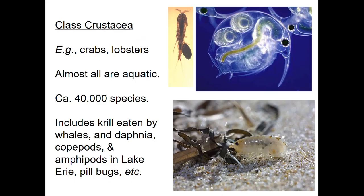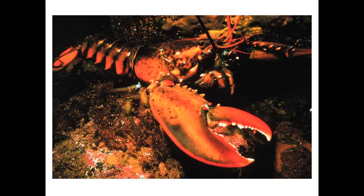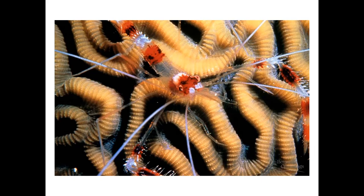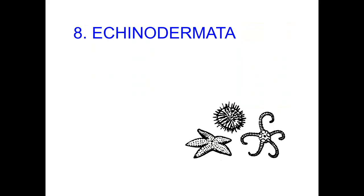Crustacea — crabs and lobsters. There are about 40,000 species; they're almost all aquatic. This includes krill, copepods, and amphipods.